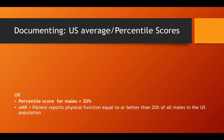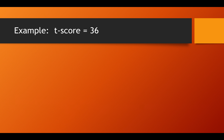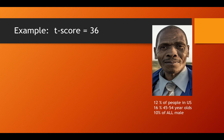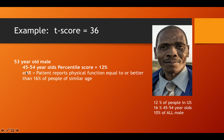If using the gender-adjusted score, you would record: patient reports physical function equal to or better than 20% of all males in the US population. Now let's consider a patient who's 53 years old with a T-score of 36. The algorithm output shows 12% of people in the US have similar or lower scores, 16% of people aged 45 to 50 have a similar score, and 10% of all males have a similar score. Choosing the age-adjusted score, the E-record entry might read: patient reports physical function equal to or better than 16% of people of similar age.